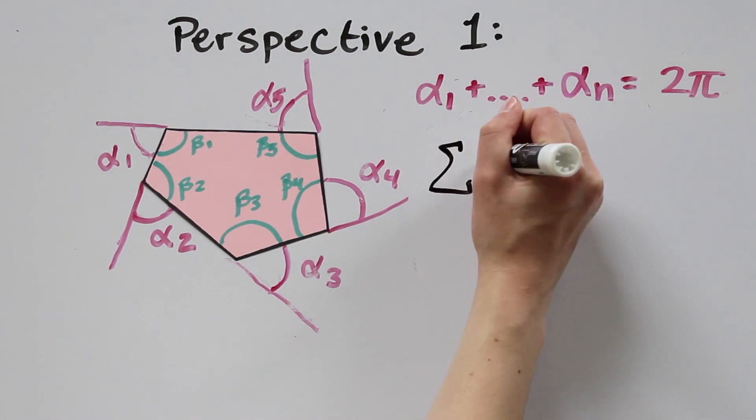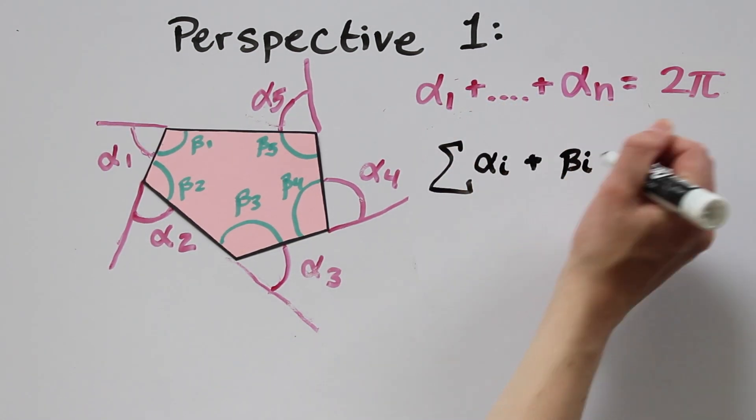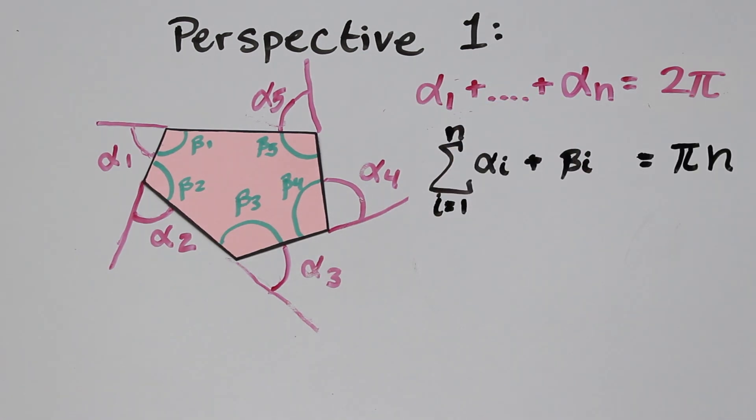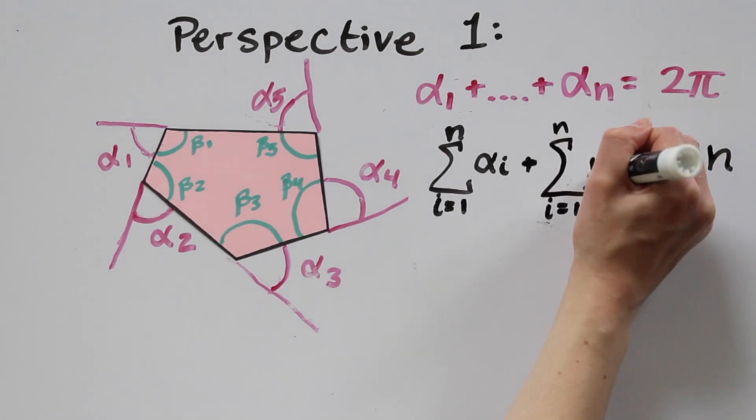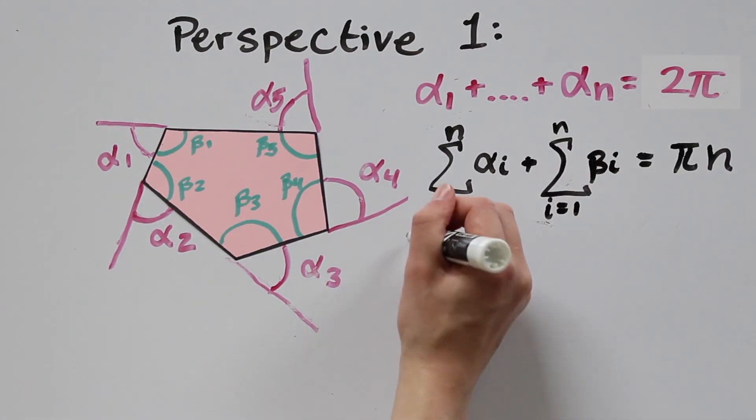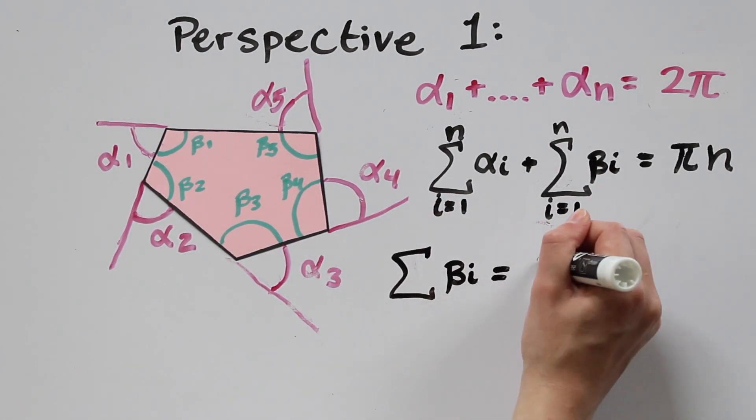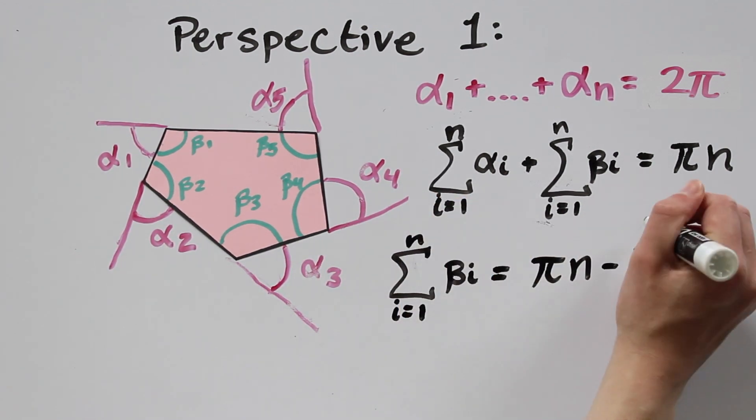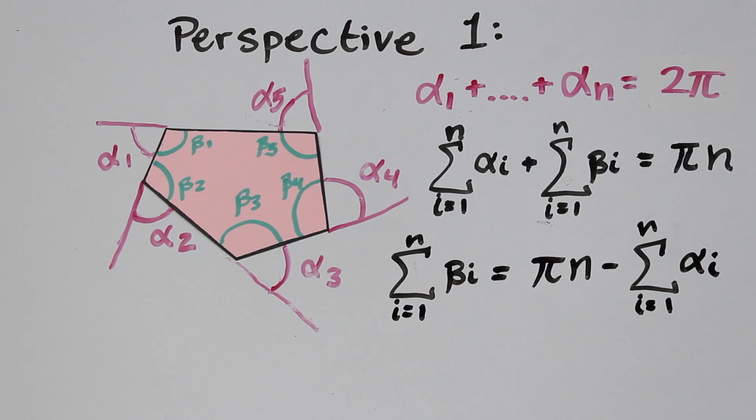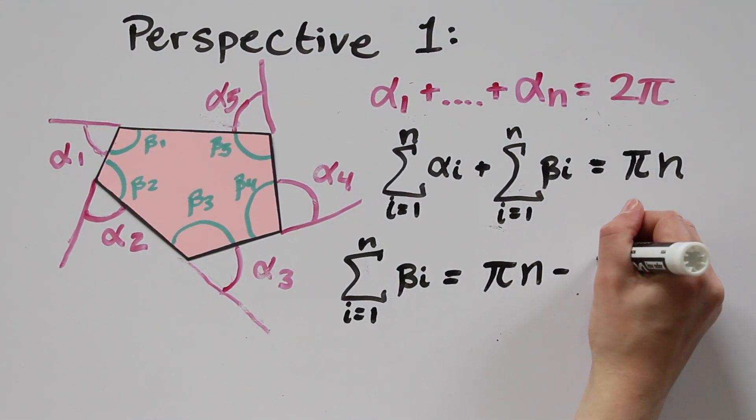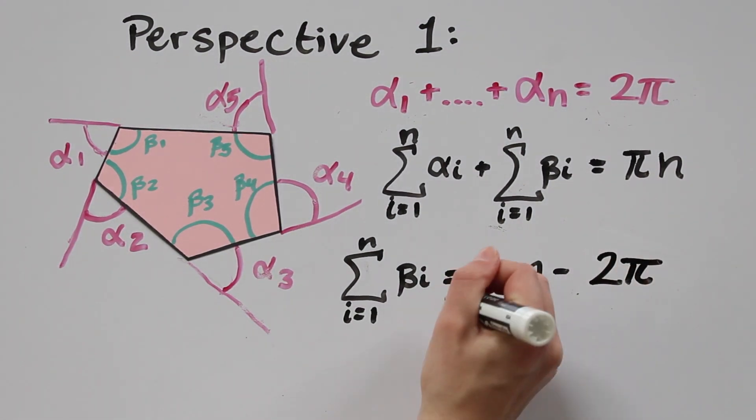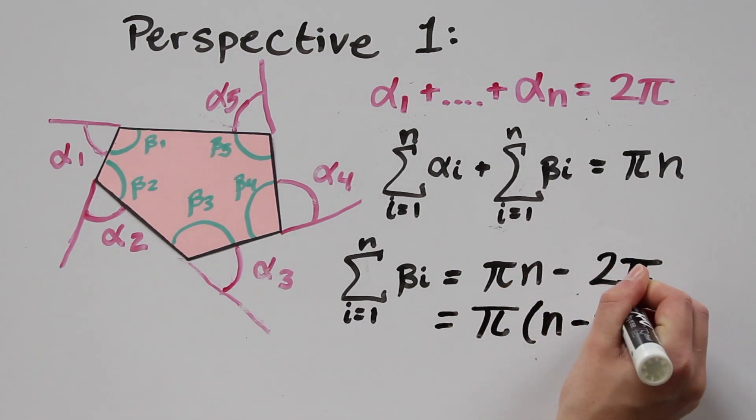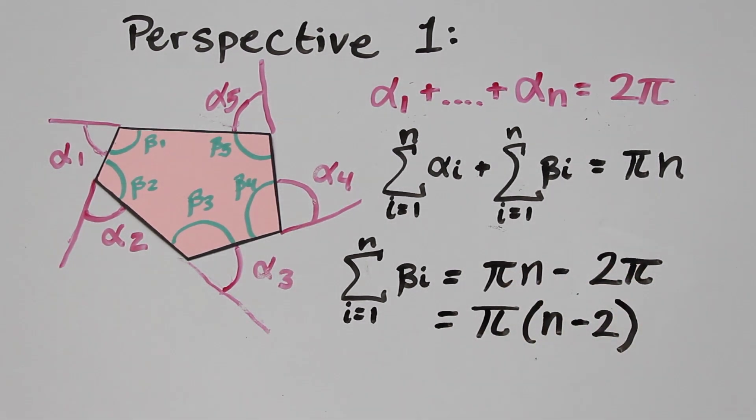This means that when we add up all of the alphas and all of the betas, we should have pi times n. Then we solve for just the sum of the interior angles, just the betas. We have pi times n minus the sum of the alphas, which we have found is 2 pi. So we see that the sum of the interior angles is pi times n minus 2, just like we wanted.